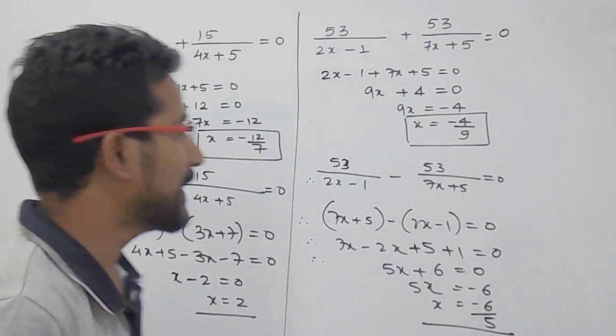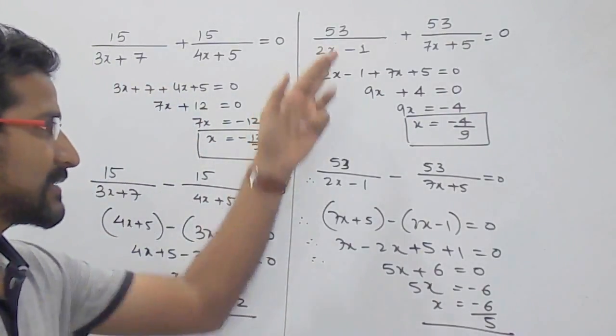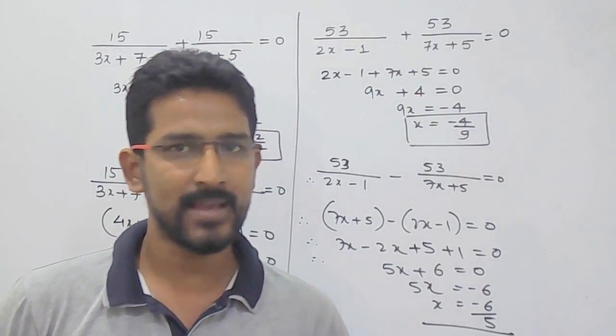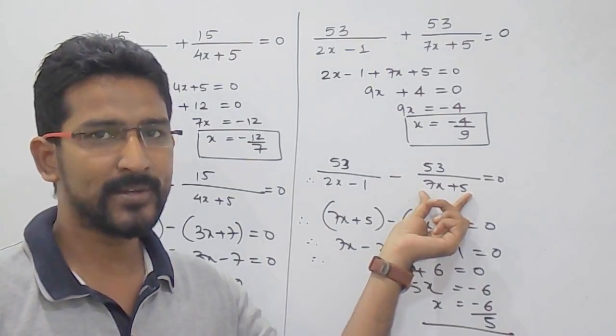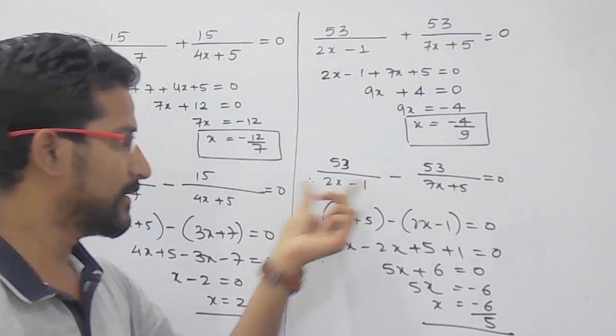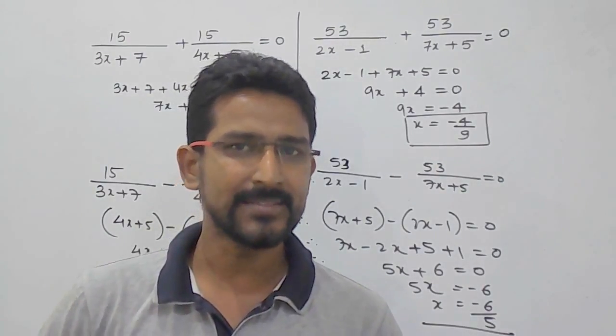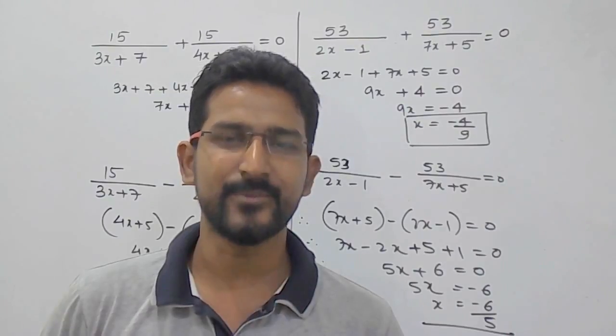So this is how you can solve any simple equation. If their numerators are same, then if it is addition, then add both the denominators and equate it to 0. And if you have to subtract it, then subtract the denominator of the second from the first. So I hope you have understood this trick, and if you find this video helpful, please share with your friends and please subscribe. Thank you.